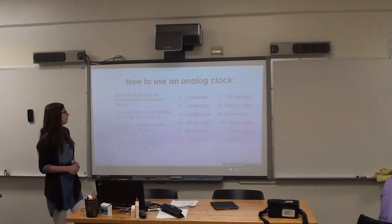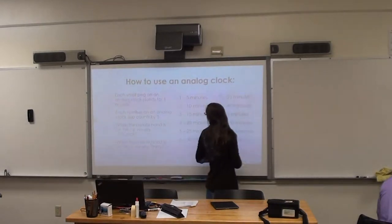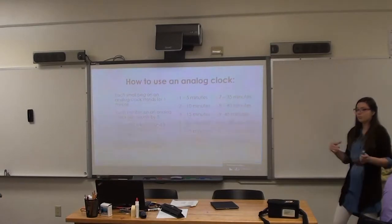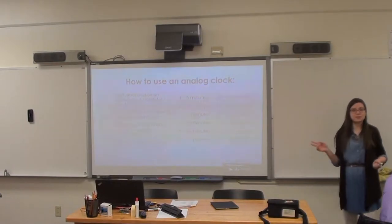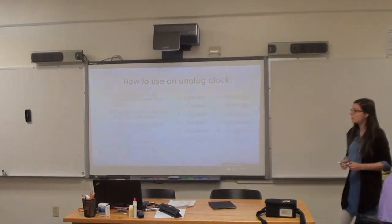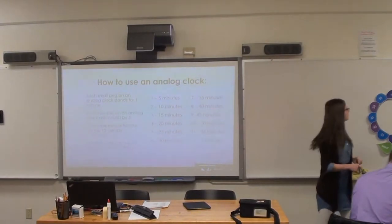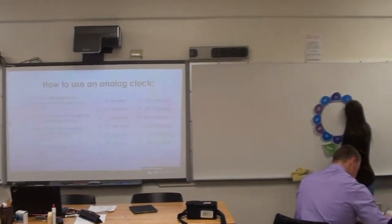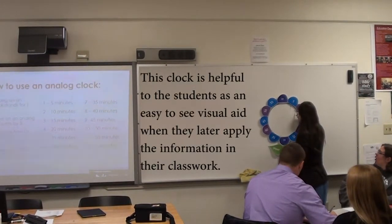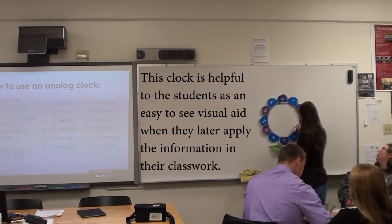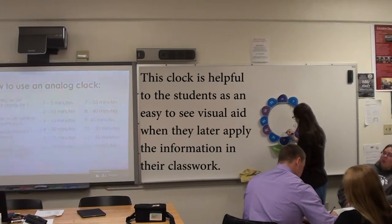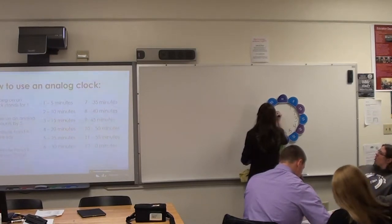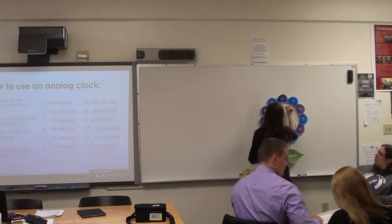So how do you use an analog clock? There are small pegs on analog clocks, and they each stand for one minute. And there are also numbers 1 to 12, and you skip count by 5 to get to each one. So: 1 would be 5 minutes, 2 is 10, 3 is 15, 4 is 20, 5 is 25, 6 is 30, 7 is 35, 8 is 40, 9 is 45, 10 is 50, 11 is 55, and 12 is 0.